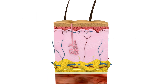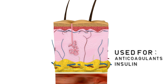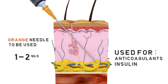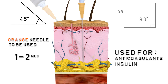The subcutaneous route is usually used when slow absorption medications are needed, for example anticoagulants and insulin. It is only suitable for the administration of one to two mils of medication and should be administered just below the subcutaneous layer. This is found by lifting the skin to raise the adipose tissue from the muscle layer, which will determine the injection angle. The nurse has to calculate whether to use a 45 degree angle or a 90 degree angle to reach the subcutaneous site.